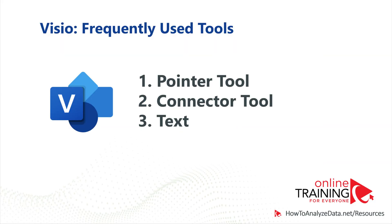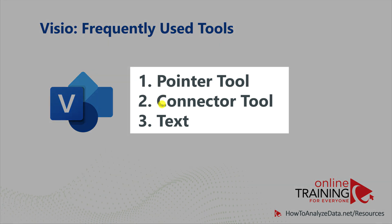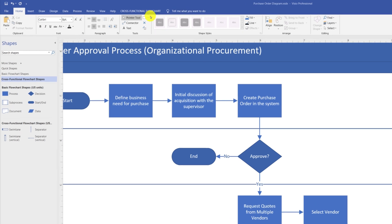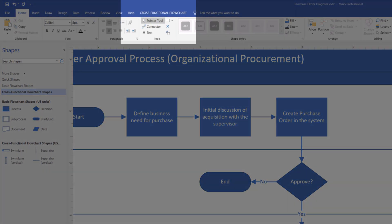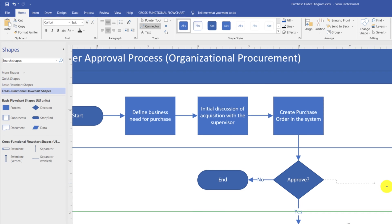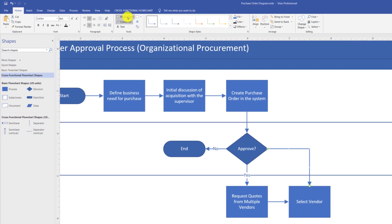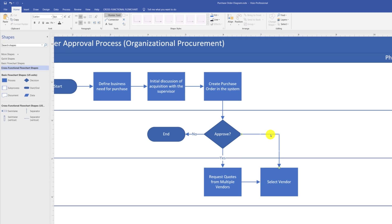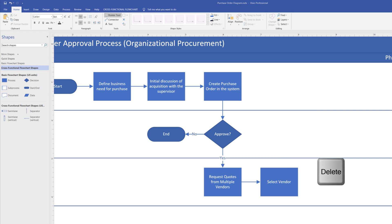You may have noticed frequent switching between the pointer tool and connector tool in Microsoft Visio. These are among the three most used tools in the application. The pointer tool lets you position, drag, resize, and access properties of shapes. Using the connector tool, you connect shapes by dragging a line between them. You need to switch back to the pointer tool to delete a line — select the line and click cut or press delete on the keyboard.